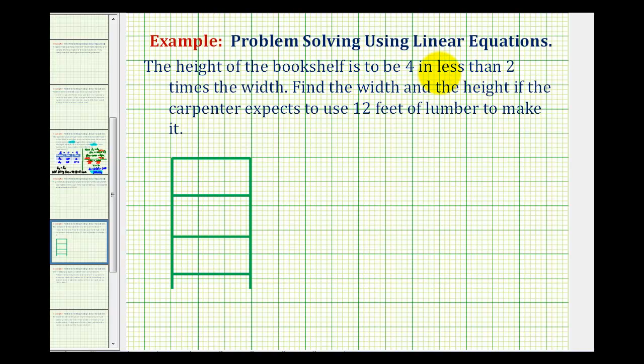The height of a bookshelf is four inches less than two times the width. Find the width and the height if the carpenter expects to use 12 feet of lumber to make the bookshelf.